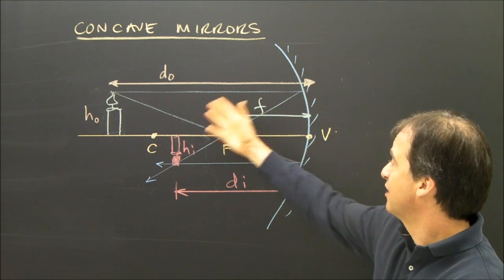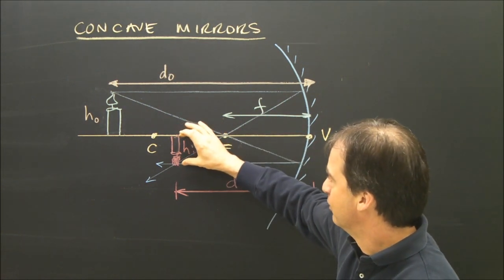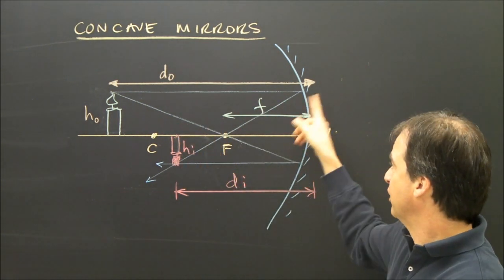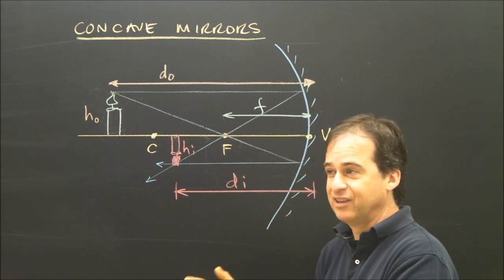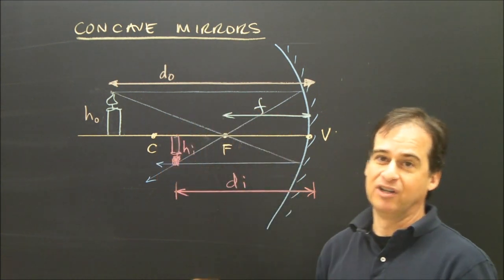So I can see from this diagram that the image is smaller and inverted and real, because the rays actually meet. But we want to be able to calculate that and not have to do this by drawing a diagram.